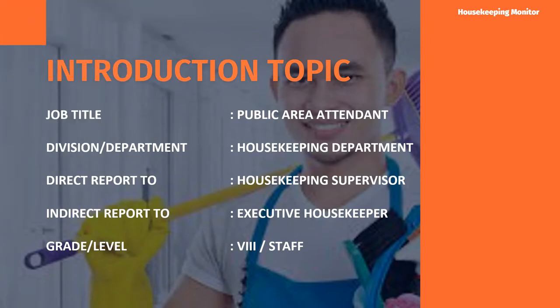Introduction Topic. Job Title: Public Area Attendant. Division or Department: Housekeeping Department. Direct Report to Housekeeping Supervisor, and Direct Report to Executive Housekeeper. Grade and Level: Aid and Staff Level.